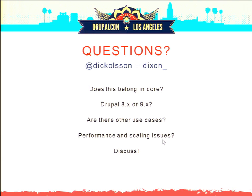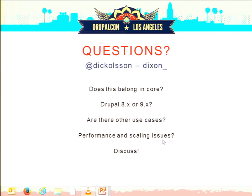A question about whether this works with forward revisions and default revisions added to Drupal 8. The speaker answers: you can change what becomes the default revision — when you create a new revision it doesn't have to become the default one. Default revision functionality is essentially what you'd use for forward revisions. Using normal entity hooks you can say this should not be the default revision. There is logic suggesting a default, but modules can override that in entity hooks. So yes, forward revisions are definitely possible.